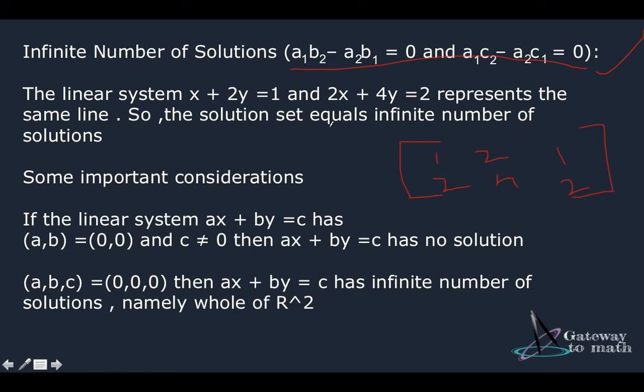Some important point of considerations that you should keep in mind and also they're again very obvious in nature. So if we have a linear equation in the form of ax plus by equals c and if a comma b equals 0 comma 0 and c is not equivalent to 0, then obviously ax plus by equals c has no solution because this is a hypothetical situation again.